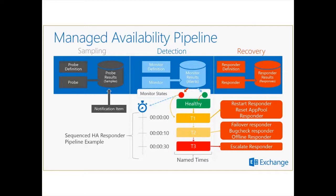This is a very generic model that applies to basically anything on a mailbox server. Because it's generic enough, probes can be any code that the author decided, so we can find out if anything is healthy. Some are checks, which are based on performance counters instead of probes. Notification items, instead of recurring probes, are code running in other parts of the service that directly writes a failed probe. Enough talk — time for demos.